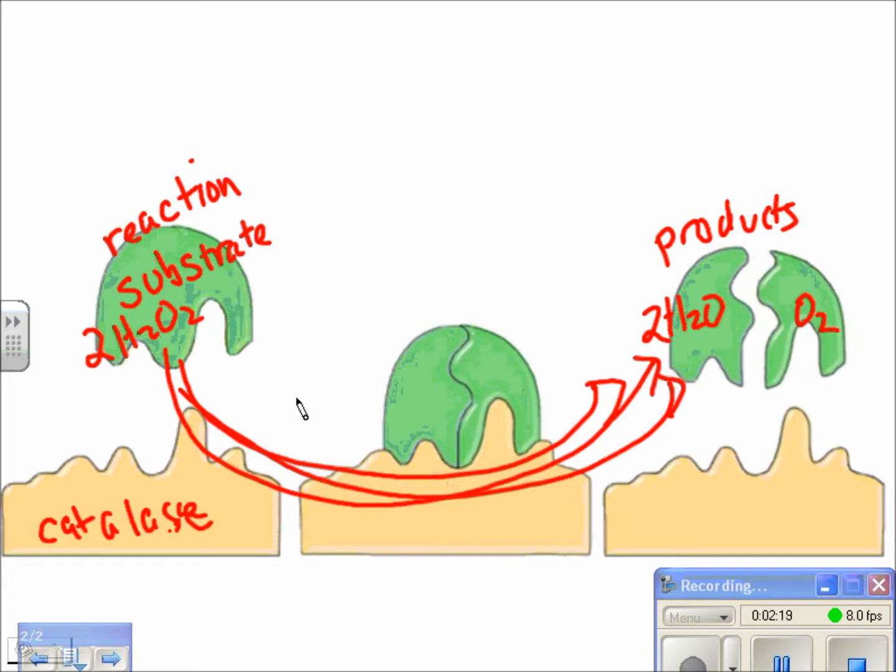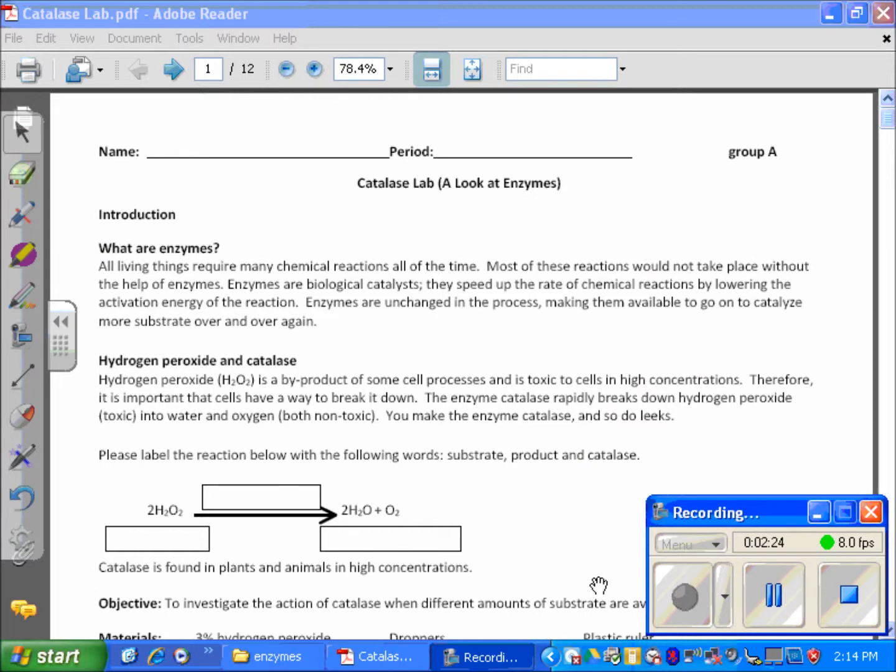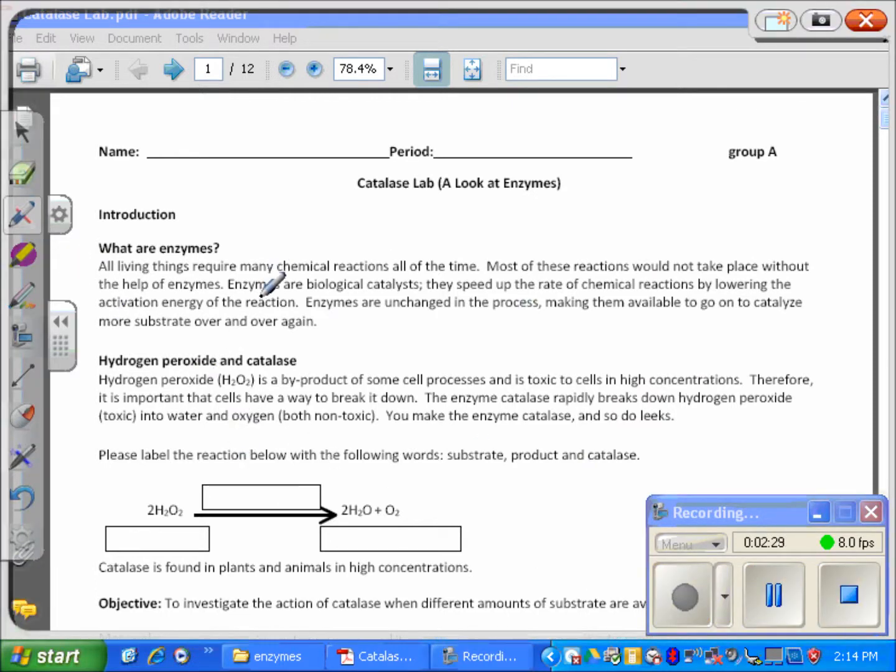What we're going to do now is look at the worksheet that you have to complete with this lab. Here's the worksheet you'll be completing. What you'll need to fill in is that the H2O2 is the substrate - there'll be a quiz on this the day after you do the lab. The products are water and oxygen, so you're going to write "products" right here. Usually we write the enzyme over the arrow so we know that there was an enzyme that helped make the substrate become the products. The enzyme that we used is catalase.